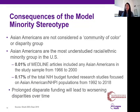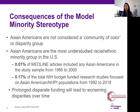An analysis showed that 0.01% of MEDLINE articles included any Asian Americans in the study sample from 1966 to 2000. And 0.17% of the total NIH budget funded research studies that focused on Asian American or Native Hawaiian Pacific Islander populations from 1992 to 2018. You would at least anticipate that these percentages would be somewhat close to the overall U.S. population of Asian Americans, which is 5.6%. So there is a clear disparate amount of funding being allocated towards these populations, and this prolonged disparate funding will lead to worsening disparities over time.